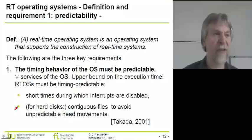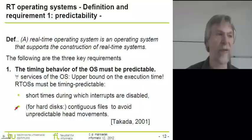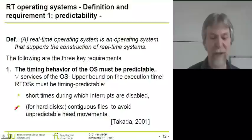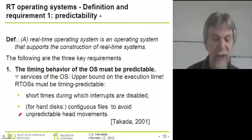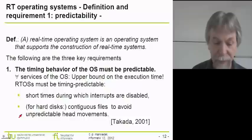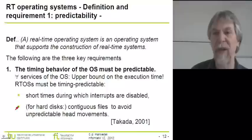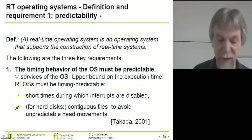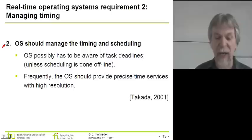Another example in the same direction: if there is a hard disk in the system, access to the file system can be problematic. Standard file systems used in PCs allow scattered distribution of sectors belonging to one file. If we have to read sectors from different areas of the hard disk, head movements take considerable time, making access times rather unpredictable. Therefore, for real-time systems it is sometimes required that files be contiguous, occupying contiguous areas of sectors on the disk.